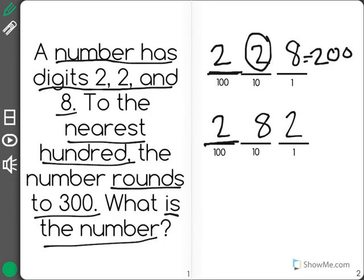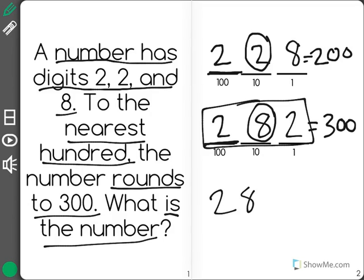In the bottom number we have an 8 in the tens place which is big enough to round up the number in the hundreds place which will give us a 3 and the numbers to the right become zeros. So 282 is the number that rounds up to 300.